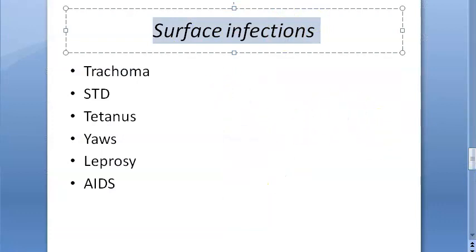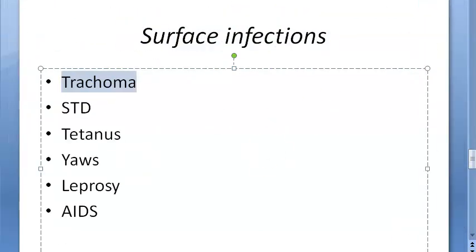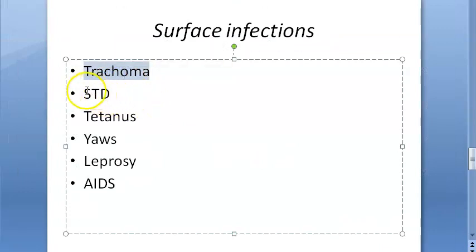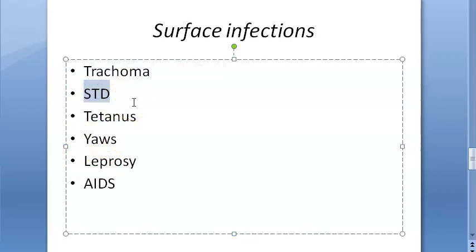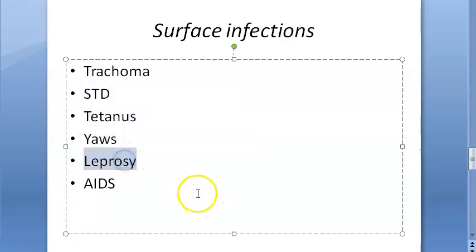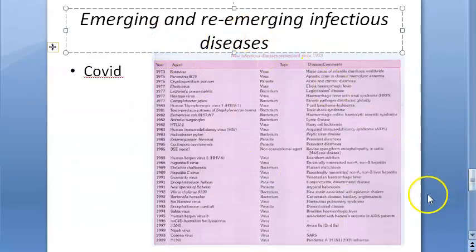Surface infections are dealt with separately. Trachoma is an eye infection; infectious conjunctivitis is caused by Chlamydia bacteria. Sexually transmitted diseases include HIV, syphilis, gonorrhea, herpes, chancroid (caused by Haemophilus ducreyi), human papillomavirus, and trichomoniasis. Other notable diseases: tetanus (Clostridium tetani), leprosy (Mycobacterium leprae), and AIDS (human immunodeficiency virus, also associated with HTLV).